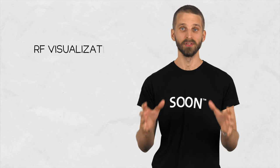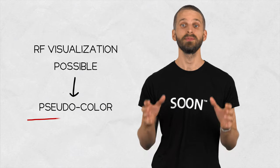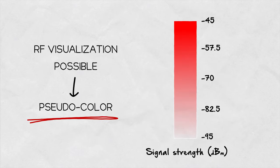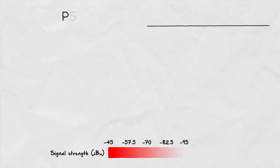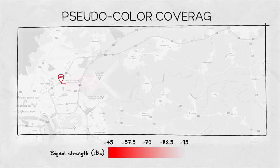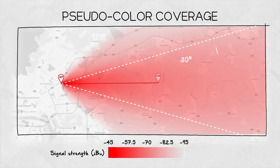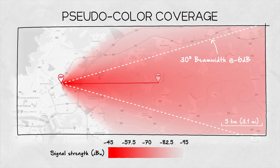What we can do is visualize RF coverage using a pseudocolor — assigning the strongest signal a certain color, and the weaker the signal gets, the more transparent it becomes. Here we show the coverage using a 30-degree symmetrical horn. The dashed line indicates the minus 6 dB beamwidth. It's obvious that the covered area spans well beyond the beamwidth angle, because the coverage is a projection of the whole radiation pattern onto a surface.